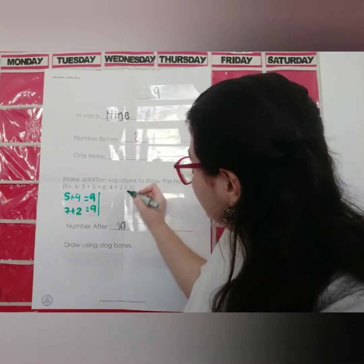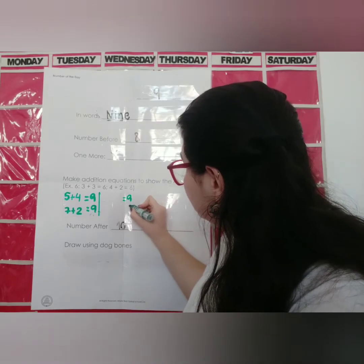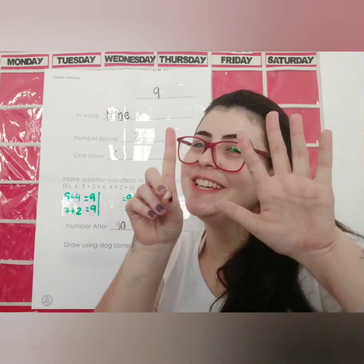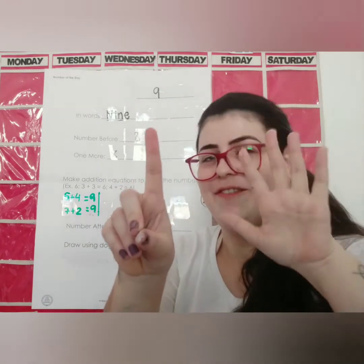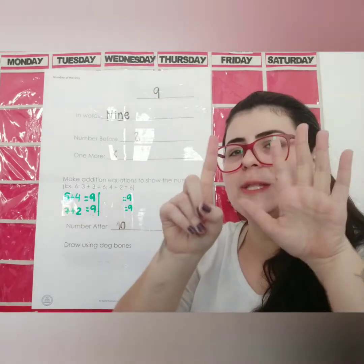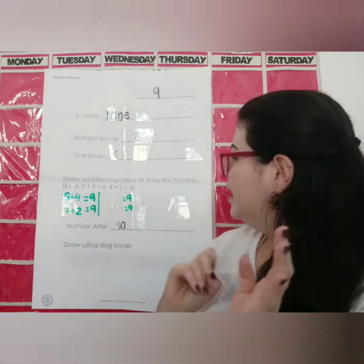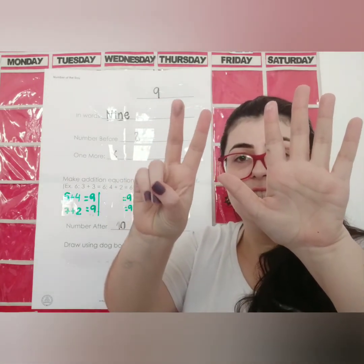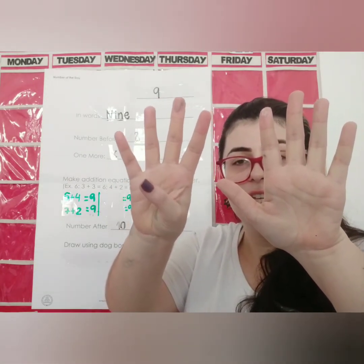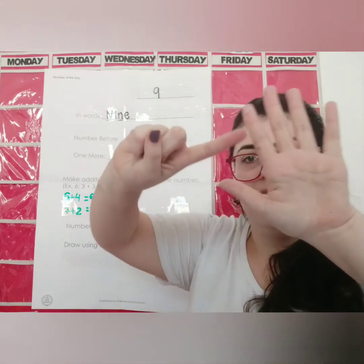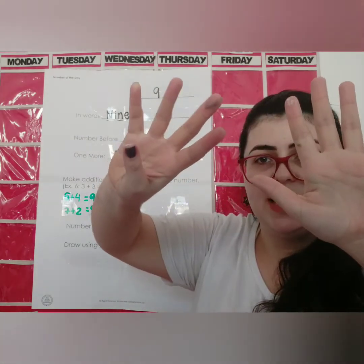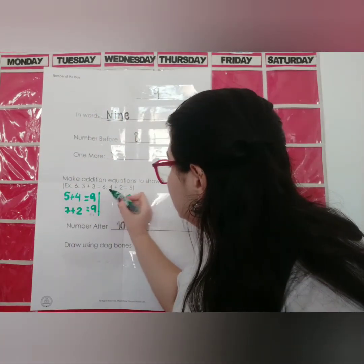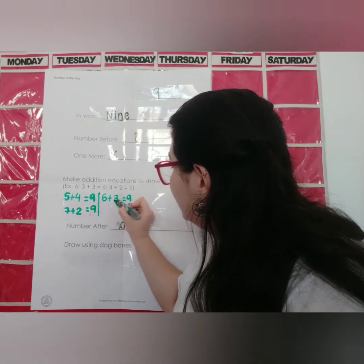Now, another one. You know the answer is 9. 6 plus which number? The answer is 9. 6, 7, 8, 9 — the answer is 3. So, 6 plus 3.